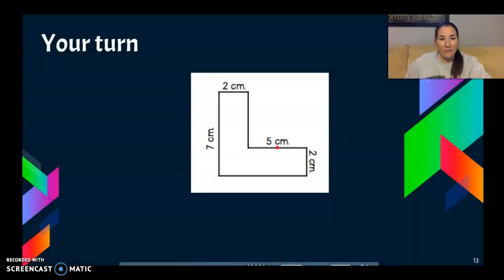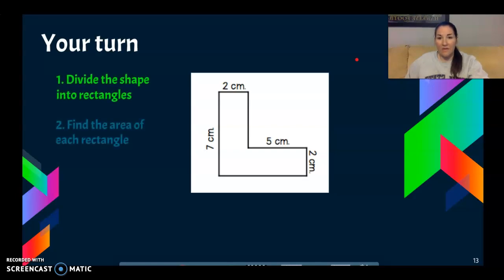I have one more example for you. In this one, I want you to try and go through all the steps on your own and solve it, and then I'll model what my thinking is. So as a reminder, those three steps: divide the shape into rectangles, find the area of each rectangle, and then add the area of all the rectangles. So go ahead and do all three steps, then press play to see what I did.